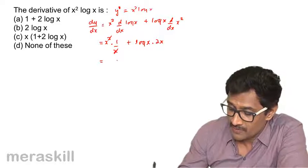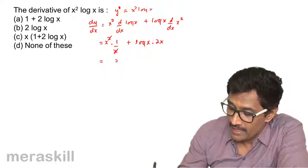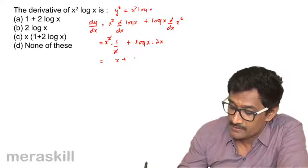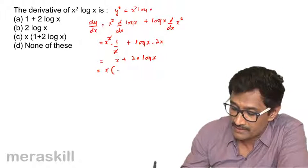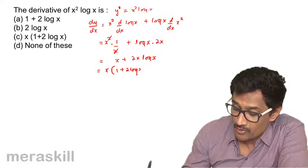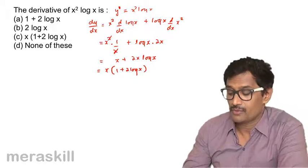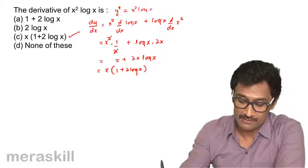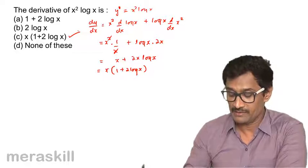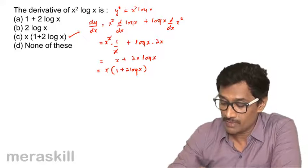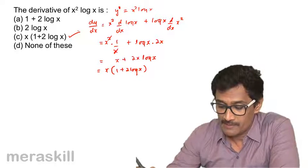This gets cancelled of course, so you get x plus 2x log x. You can take x as a common factor, giving x into (1 + 2 log x). Hence dy/dx = x(1 + 2 log x).